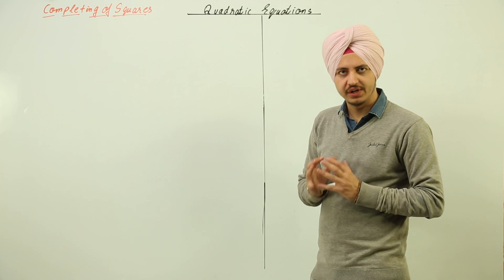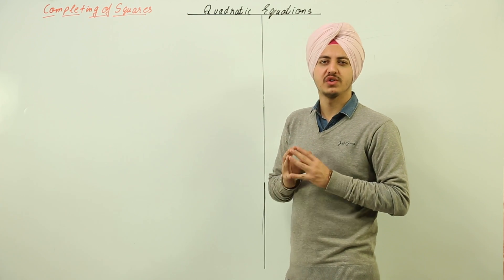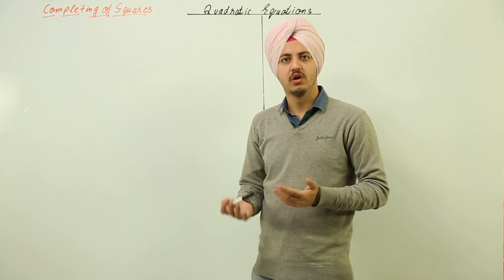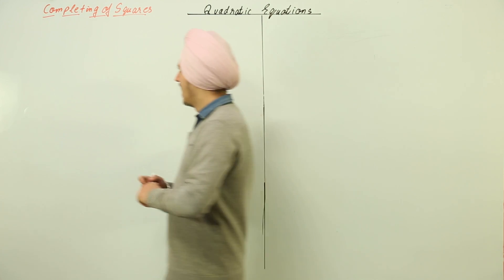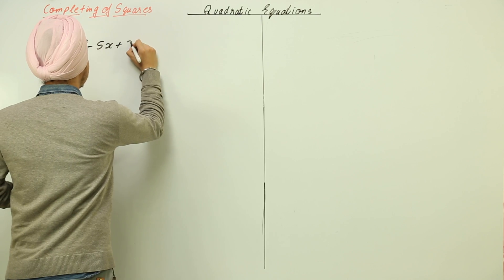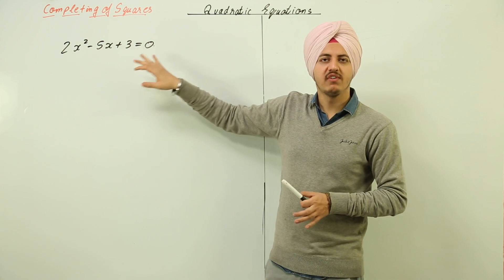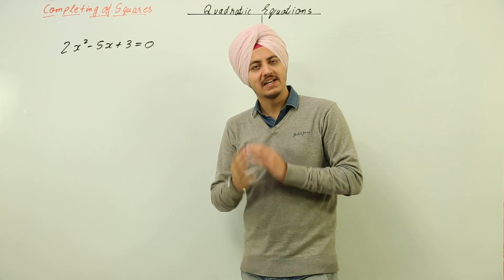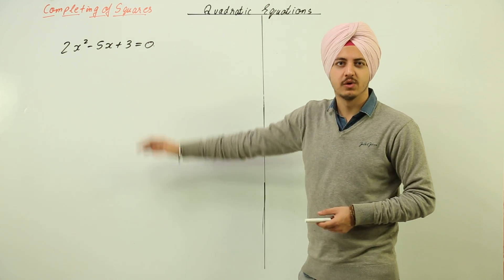We are finding solutions for quadratic equations, and the next method is completing the square. I will show you how to solve equations by completing the square with an example: 2x² minus 5x plus 3 equals 0. I will take you through the steps via this example and then we will perfect this method with other examples.